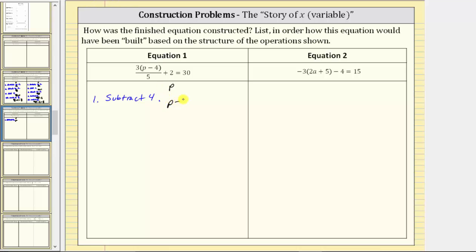So if we subtract four from p, we get the expression p minus four. Going back to the equation, in the numerator, we have three times the quantity p minus four, which means step two is multiply by three. Now if we multiply the quantity p minus four, or this difference by three, it's really the quantity p minus four times three.